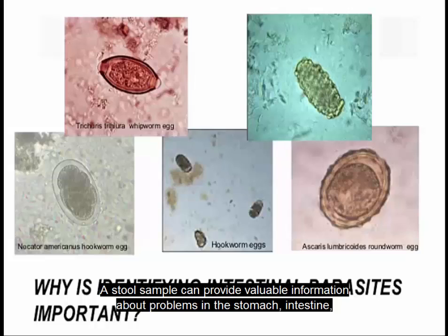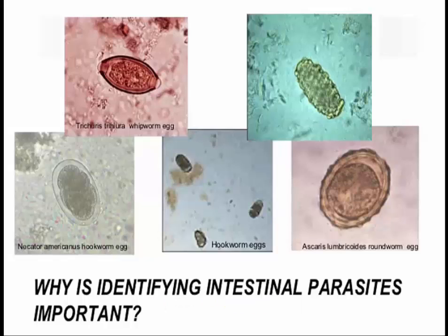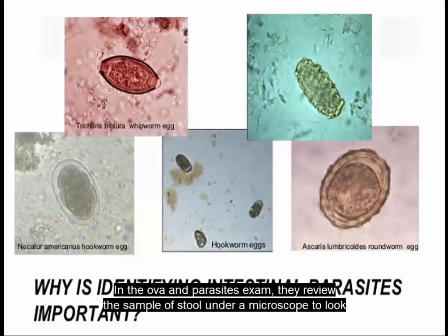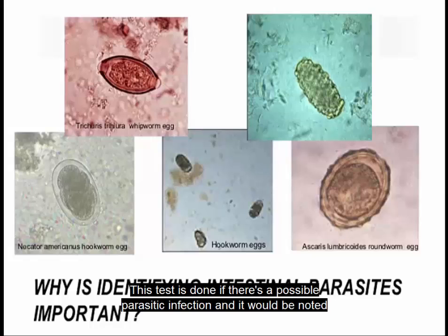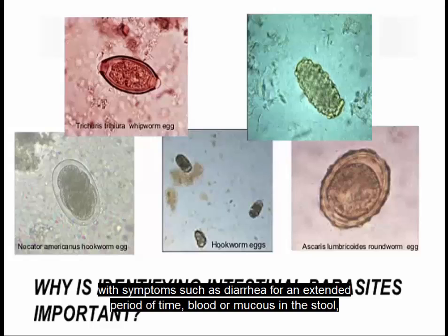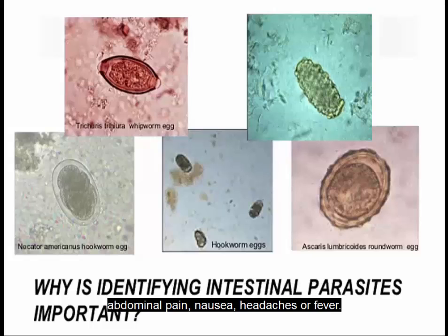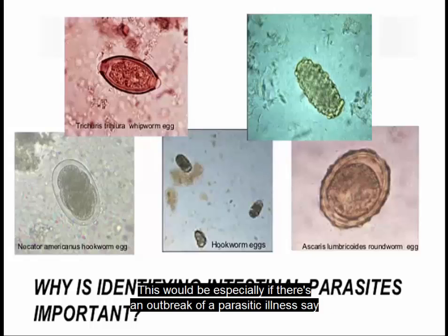A stool sample can provide valuable information about problems in the stomach, intestine, rectum, or other parts of the gastrointestinal system. In an ova and parasites exam, a sample of stool is viewed under a microscope to look for parasites and their ova (eggs), or cysts, which are hard shells that protect some parasites at a certain stage in their life cycle. This test is done if there is a possible parasitic infection, indicated by symptoms such as diarrhea for an extended period, blood or mucus in the stool, abdominal pain, nausea, headaches, or fever — especially if there is an outbreak at a child's school or daycare center, or if the family recently visited a developing country.